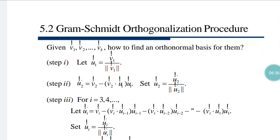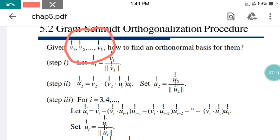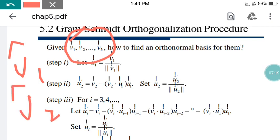Here is the procedure of the Gram-Schmidt orthogonalization process. Given V1, V2, up to Vk — these are different vectors in the form of a linear matrix. We can write V as the bracket of V1, V2, V3 up to Vk, where the hat notation (V-cap) represents the unit vector form. In this way V1, V2, V3 up to Vk are given. How to find an orthonormal basis (OB) from them?